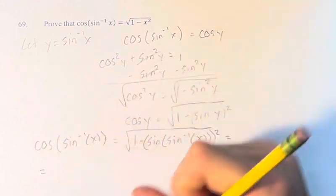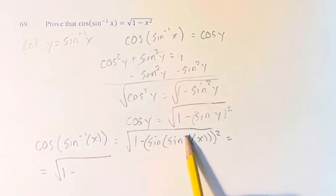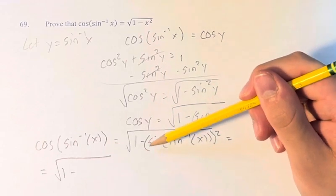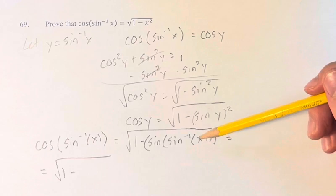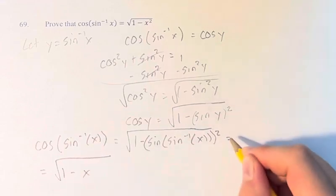Therefore, cosine of sine inverse of x is equal to the square root of 1 minus the sine of the inverse of sine of x. The sine, or any function of its inverse of something, doing that means this function and the inverse cancel out, and you're just left with the thing inside, x squared.